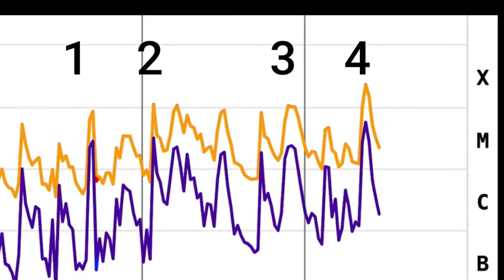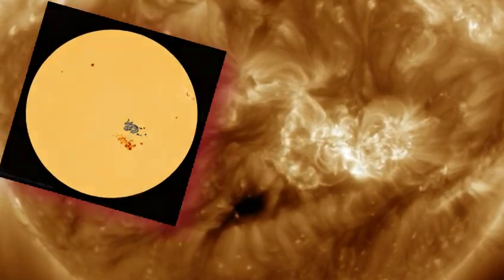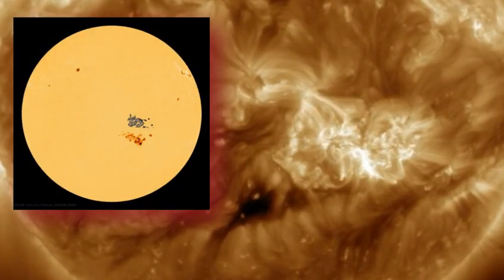These are already heading towards us and we're expecting these solar storms to begin around tomorrow and the next day. Some of these storms could be as high as KP7. That is absolutely insanely strong.